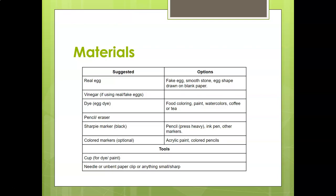Your suggested materials are to use a real egg — a chicken egg. You need vinegar if you're going to dye the egg, a pencil and eraser, Sharpie marker, and colored markers for adding to your design.